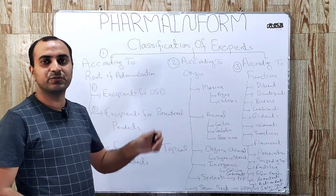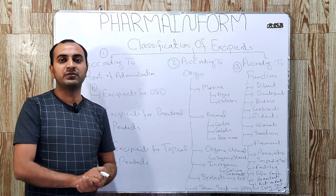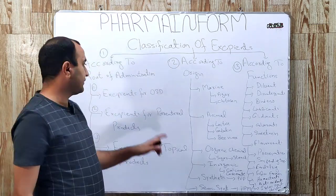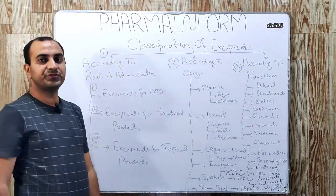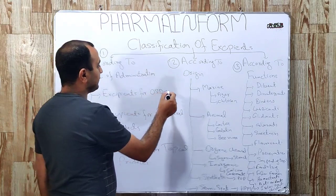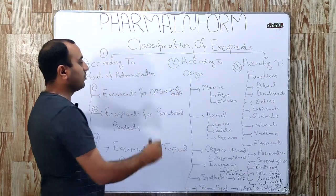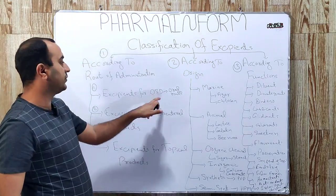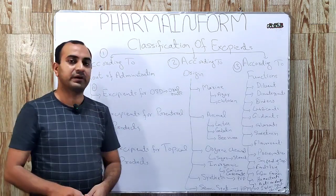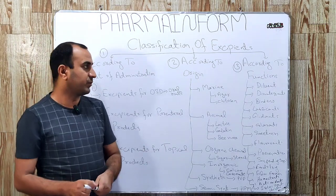As the name indicates, in this system we classify our excipients according to the route by which we are giving the drug to the body. The first category is excipients for oral route, covering both oral solid dosage forms and oral liquid dosage forms. The next is excipients for parenteral products, and the third is excipients for topical products.